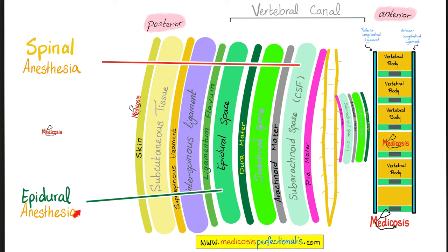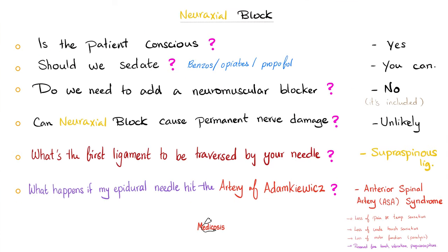Spinal anesthesia is in the subarachnoid space; epidural is in the epidural space. Q&A: Is the patient conscious during neuraxial block? Yes. Can you sedate? Yes, with benzos or opiates. Do you need a neuromuscular blocker like vecuronium? Absolutely not — the local anesthetic will paralyze the muscles because you are around the spinal cord, blocking motor fibers. Can neuraxial block cause permanent nerve injury? It's possible but very unlikely.